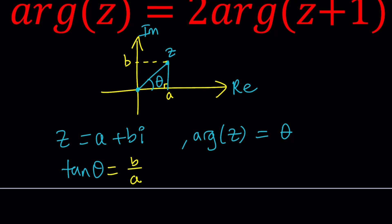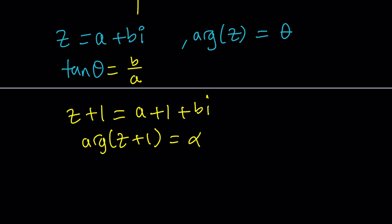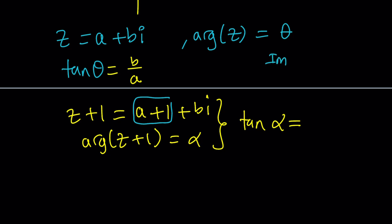Now we can go ahead and define the argument for the other number, which is z plus 1. What is z plus 1? It's A plus BI plus 1, which we can write as (A+1) plus BI. So the real part of z plus 1 is A plus 1, and the imaginary part stays the same. Let's set the argument of z plus 1 equal to alpha. Then tangent alpha is going to be B over (A+1) — imaginary part divided by the real part.